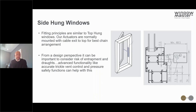Our actuators for side-hung windows are normally mounted with the cable exit at the top, which helps with chain rigidity. With side-hung windows it's also important to consider the risk of entrapment and drafts, particularly with tall windows where people might be sitting next to them opening in winter. Advanced functionality like MotorLink can help address this through very accurate trickle ventilation. We also have an enhanced pressure safety function that can be considered as part of the overall design health and safety assessment.